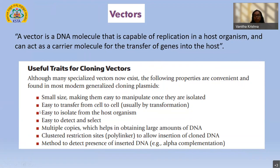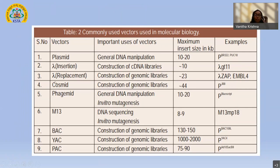Regarding copy number: low copy number — fewer plasmid copies per cell — is actually most widely preferred compared to high copy number. With high copy number, sometimes even if the gene is not expressed, bacterial growth is reduced because all nutrients get exhausted, affecting transformation and yield. Most preferred is the low copy number plasmid. A vector should also have a polylinker region and a method to detect the presence of foreign DNA introduced into the vector.